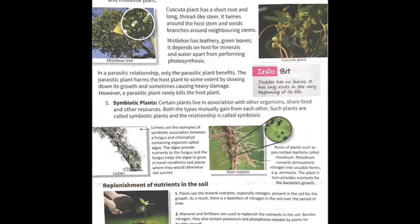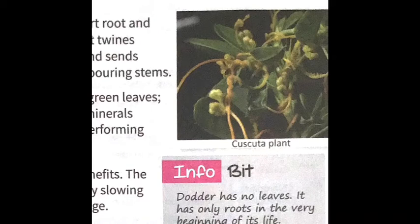Parasitic plants usually develop special roots which attach to the host plant's stem, roots, or leaves, and wrap around them to absorb food from the host plant. One example is Cuscuta, also called the Dodder plant.